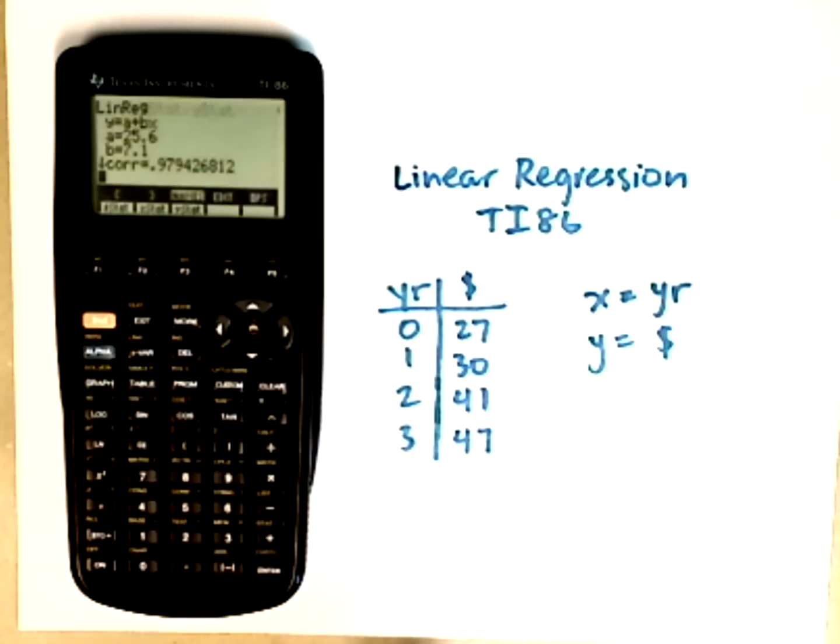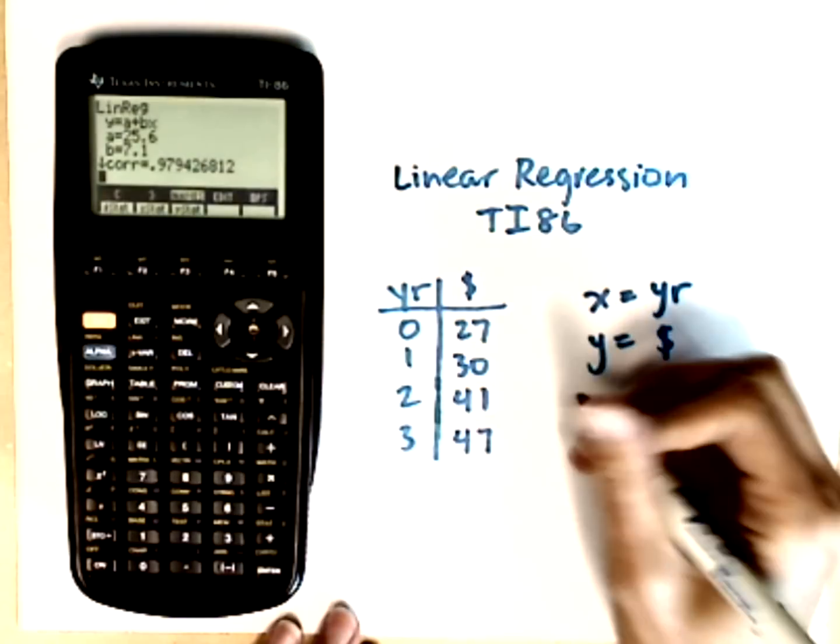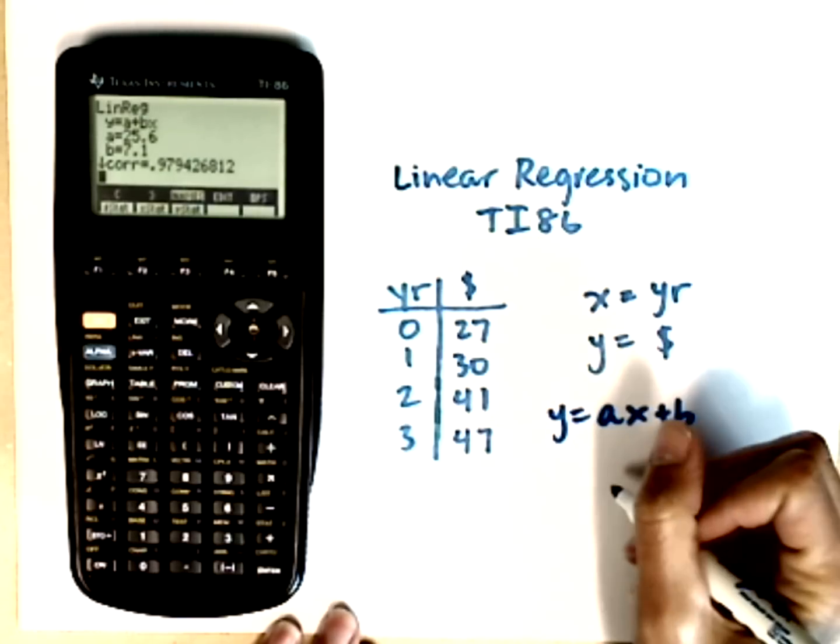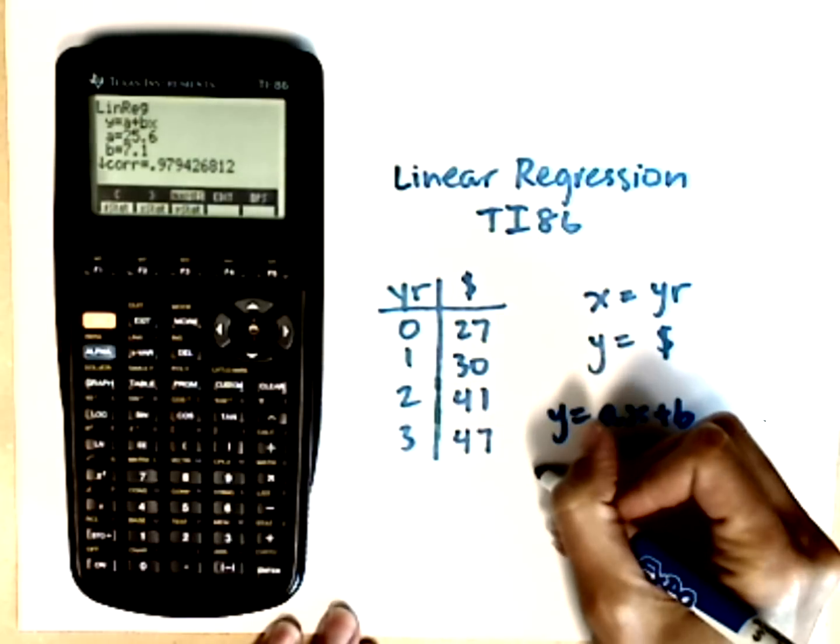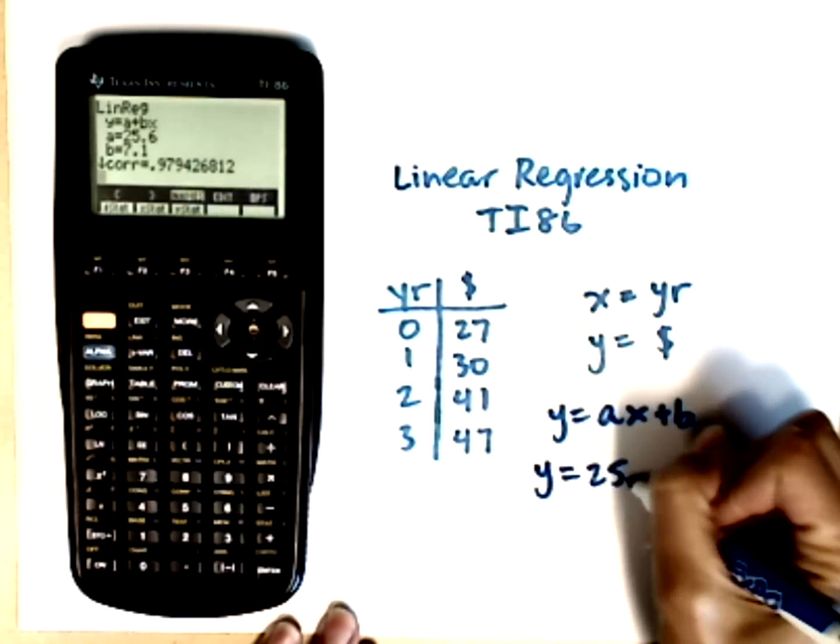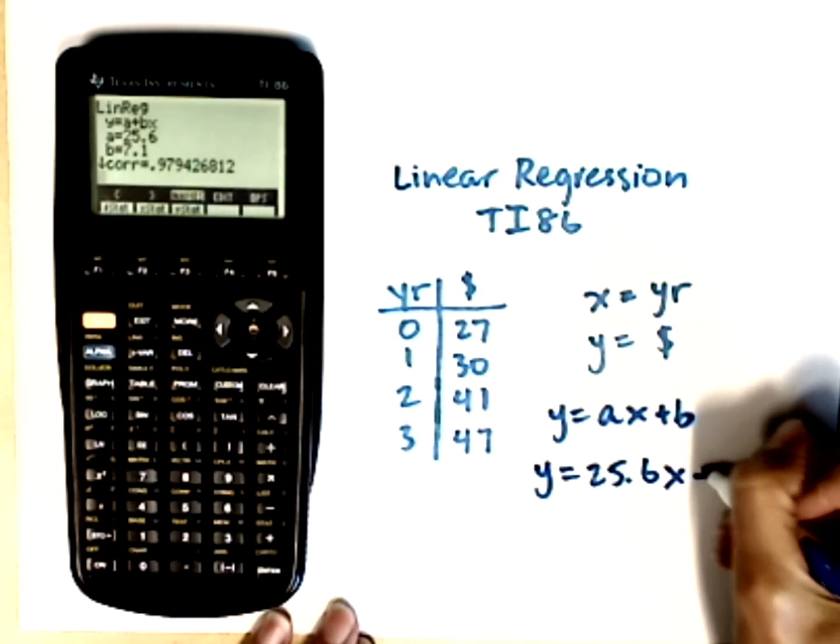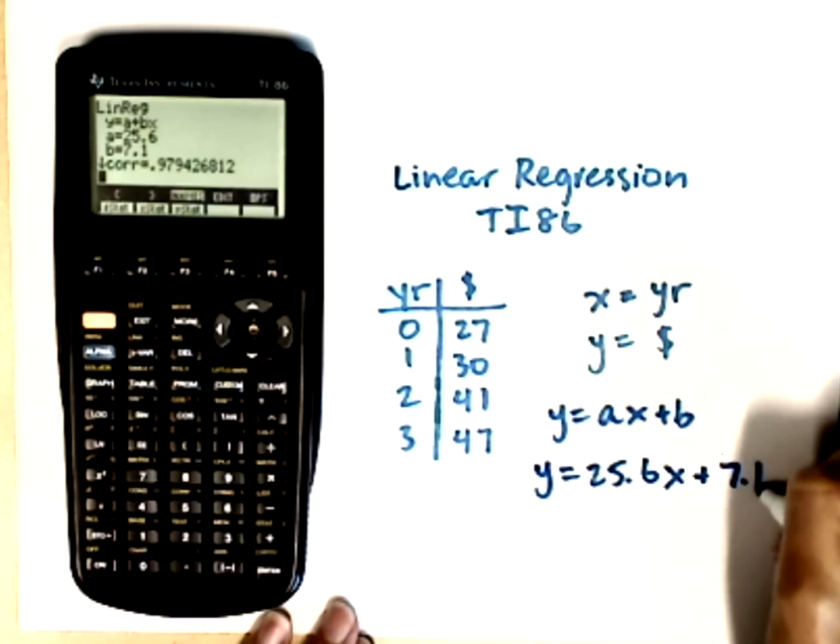Now we can hit enter. So what it gives me is a general linear equation, y equals ax plus b. It found a, which is that slope. So I can rewrite this as y equals 25.6x plus b, which is 7.1.